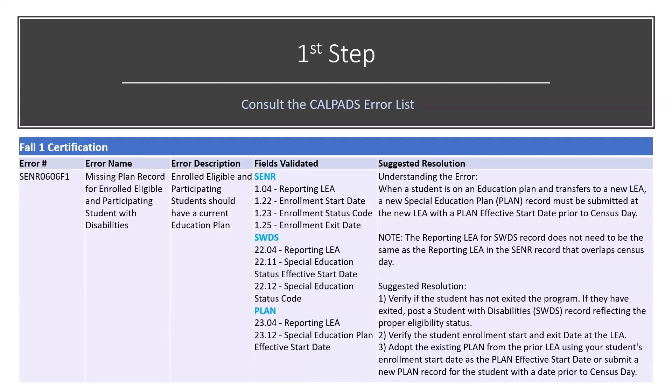Here we have an excerpt of the Classic Error List in Excel format. Going from left to right through the columns, you always have the error number and the error name, which are used for identification.